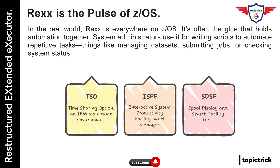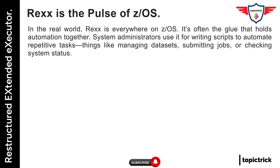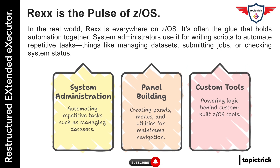Let's start with use cases. In the real world, REXX is everywhere on z/OS—it's often the glue that holds automation together. System administrators use it for writing scripts to automate repetitive tasks, things like managing data sets, submitting jobs, or checking system status. You'll see REXX used in building panels, menus, and utilities that make navigating the mainframe simpler. When you're working with custom-built tools on z/OS, there's a good chance REXX is powering a lot of the logic behind the scenes.